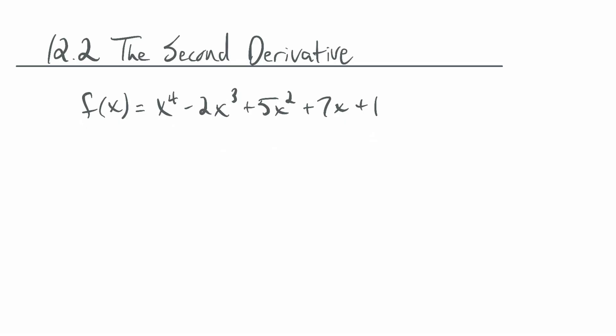This is another video in the series for Math 1133 for UTSA. Today we'll be talking about 12.2, the second derivative. Previously the derivative was just the derivative. We have f(x) equal to a degree-4 polynomial, so I can find f'(x) using the power rule: f'(x) = 4x³ - 6x² + 10x + 7. We would usually just call this the derivative, but we can also call it the first derivative, which we alluded to in the previous video where we talked about the first derivative test.